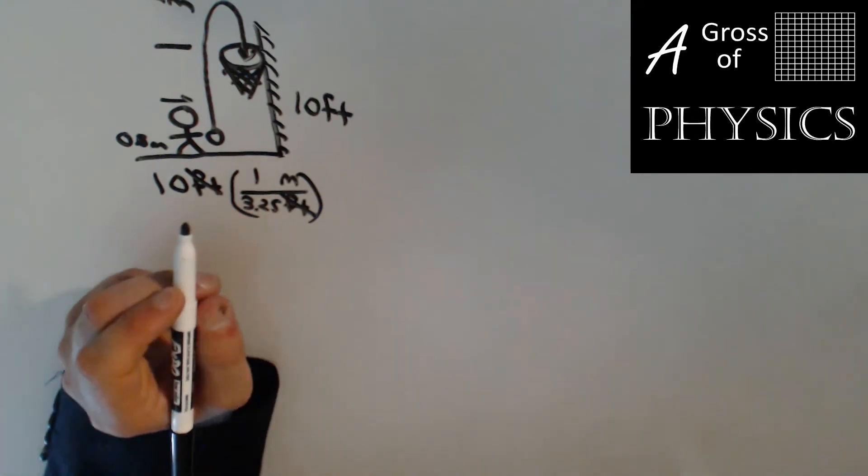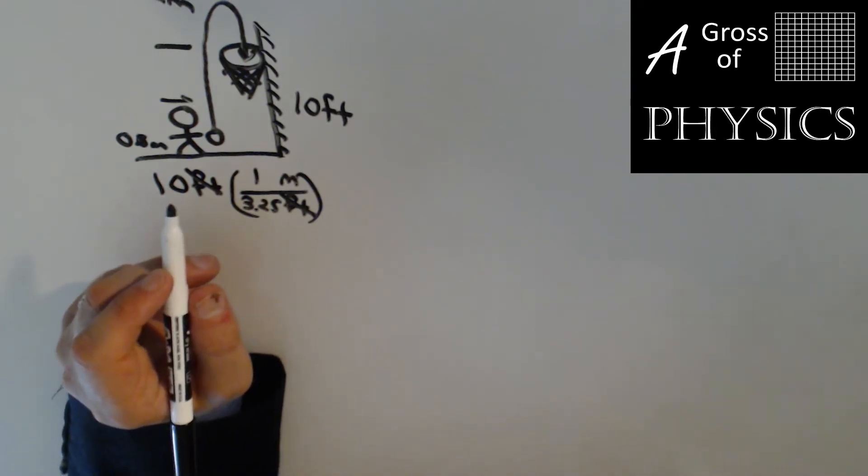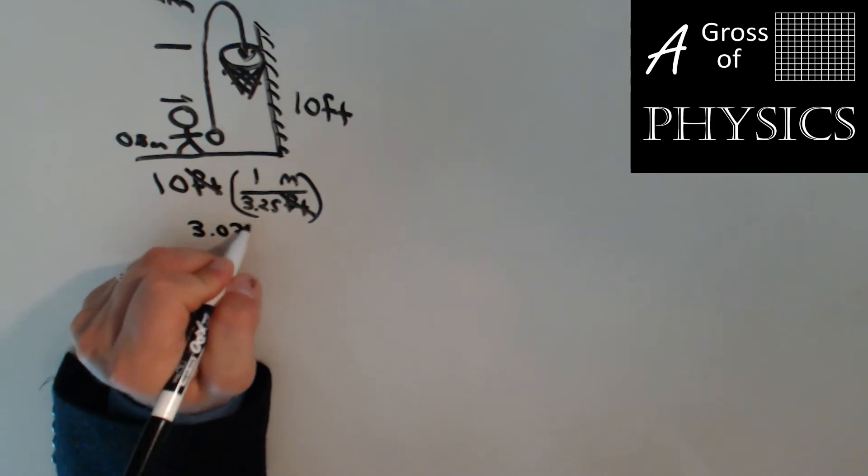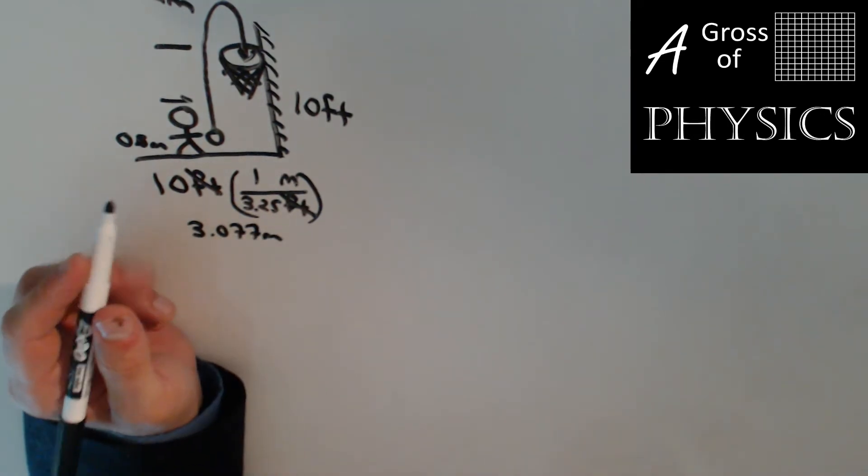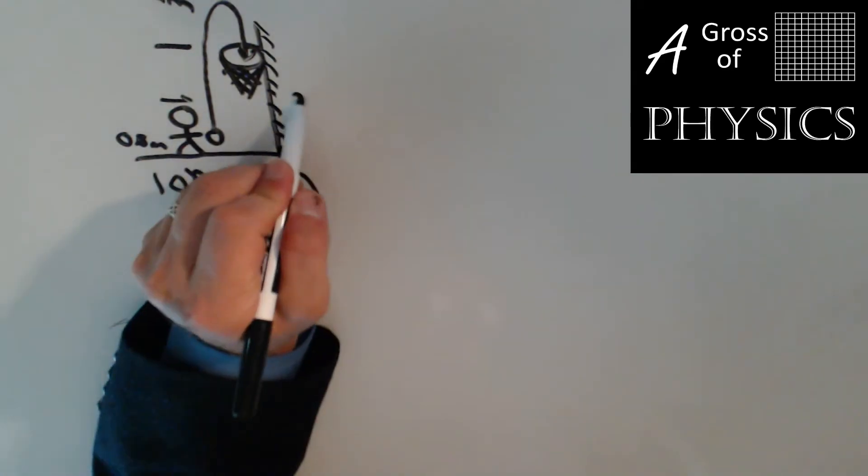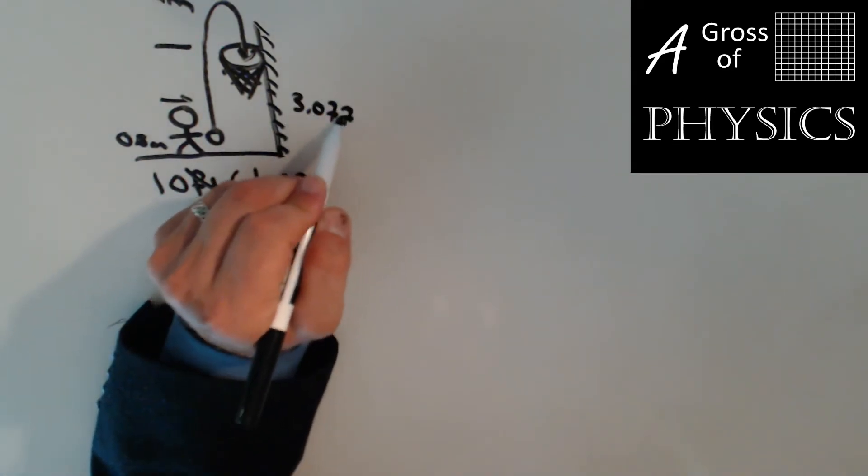I'm going to take 10 and divide that by 3.25, and I get a height of 3.077 meters. So instead of 10 feet, we're going to replace that with 3.077 meters.